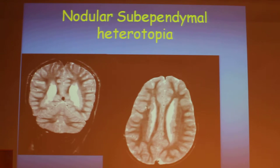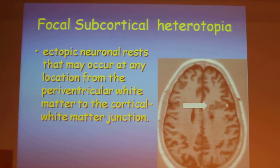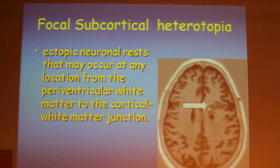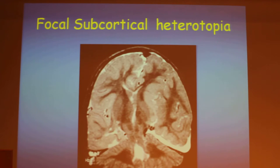The nodular sub-ependymal heterotopia can be multiple, outlining the lateral ventricle on both sides. In this case there is also a heterotopic gray matter focus here. The ectopic neuronal rest may occur all along the way from the periventricular white matter to the cortex, and they can rest all along the way as a linear gray matter, as in this case.